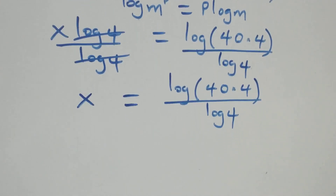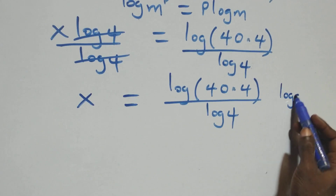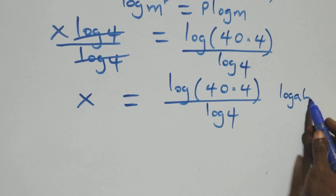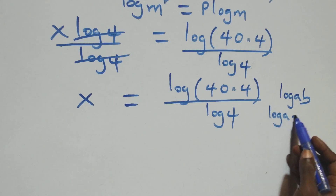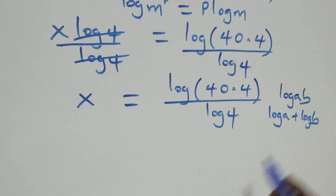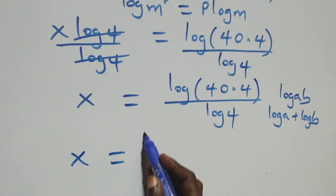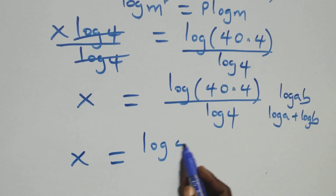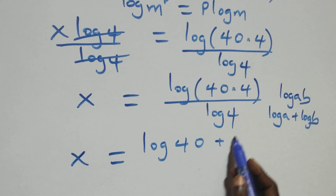This follows the law of logarithm: when we have log(a × b), this is the same thing as log a plus log b. Applying this here, we have x equals log 40 plus log 4, all over log 4.